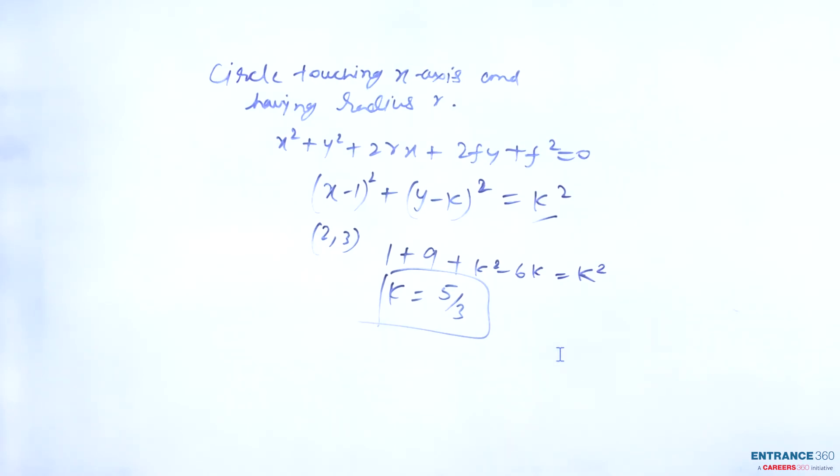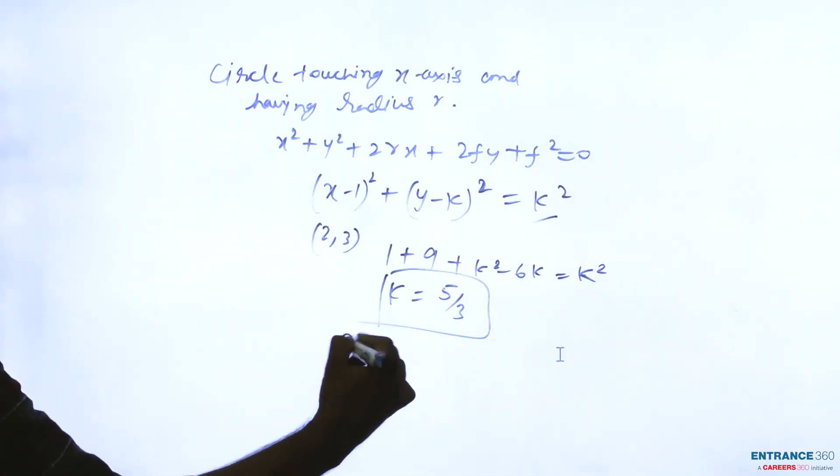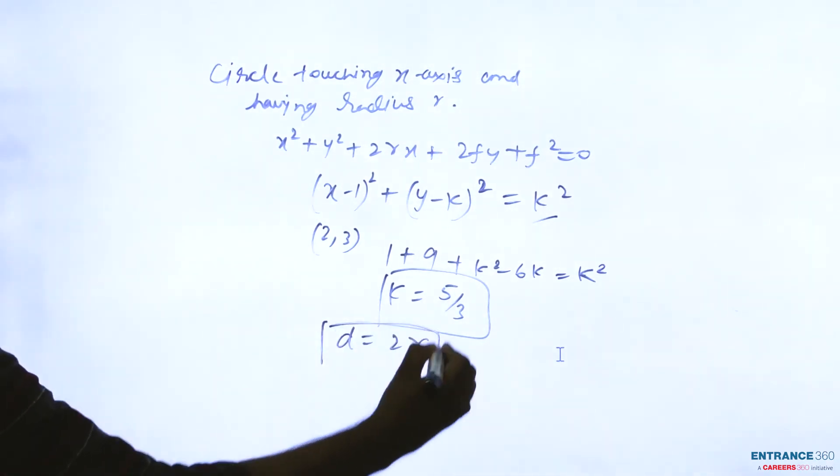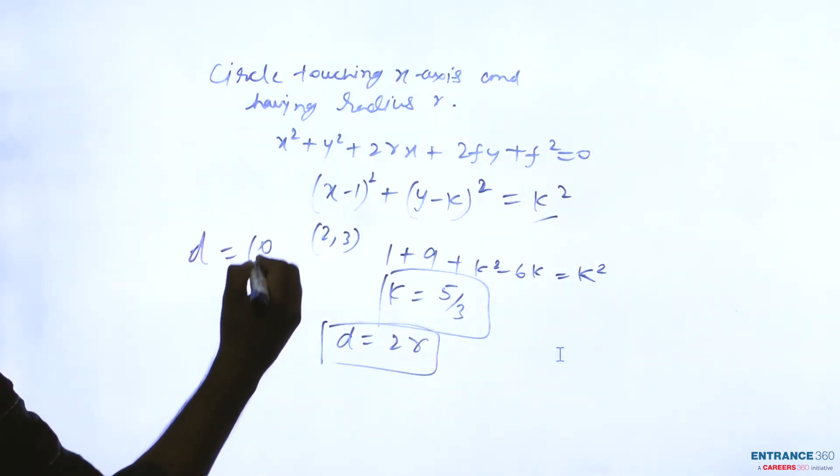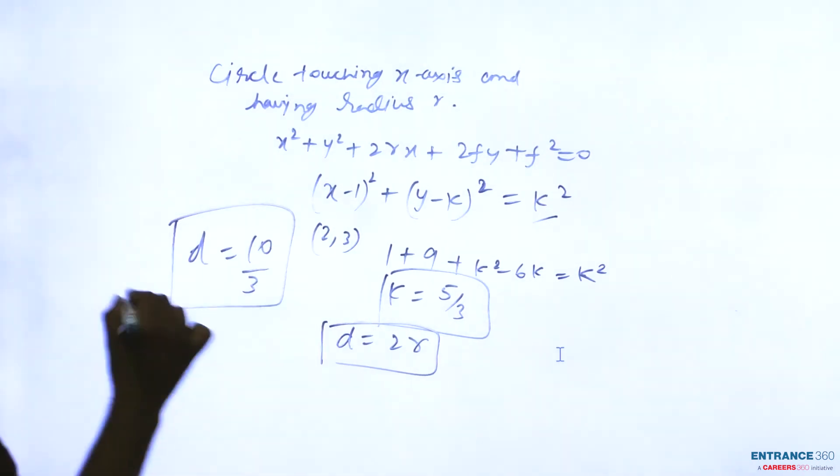Then you have to find the value of length of the diameter. The diameter is 2 times the radius, means diameter is 10/3.